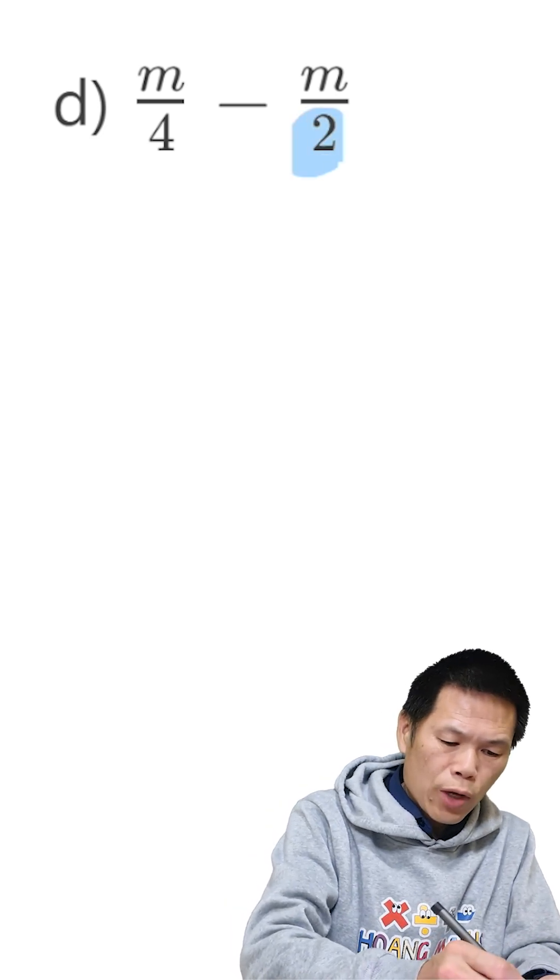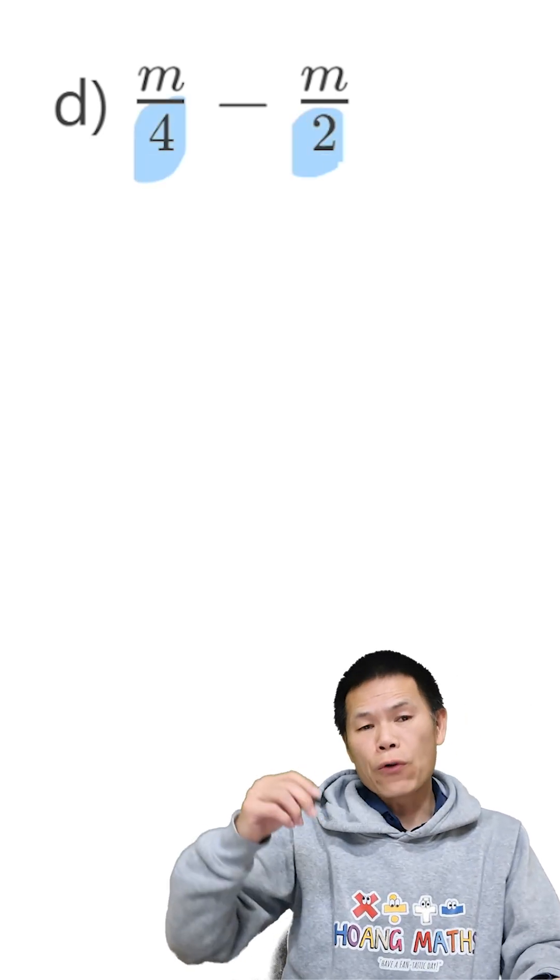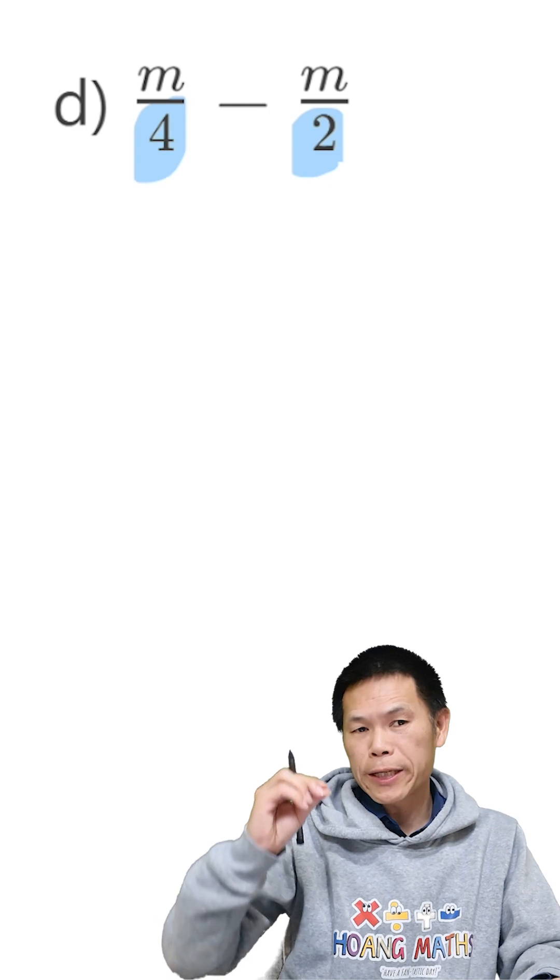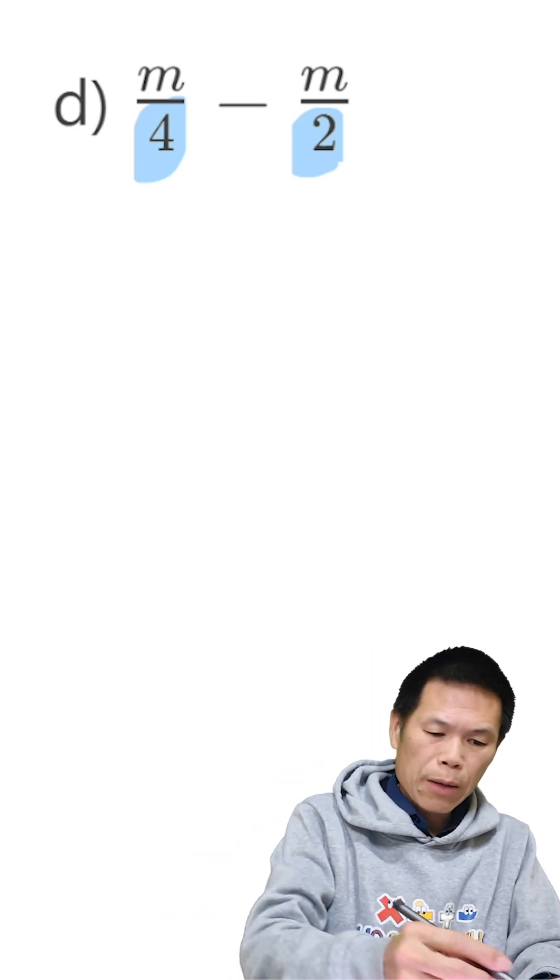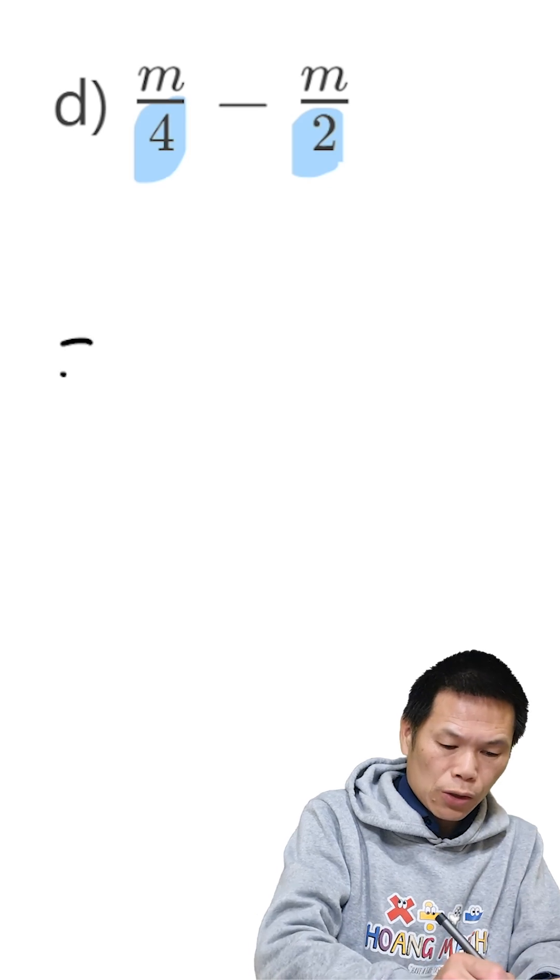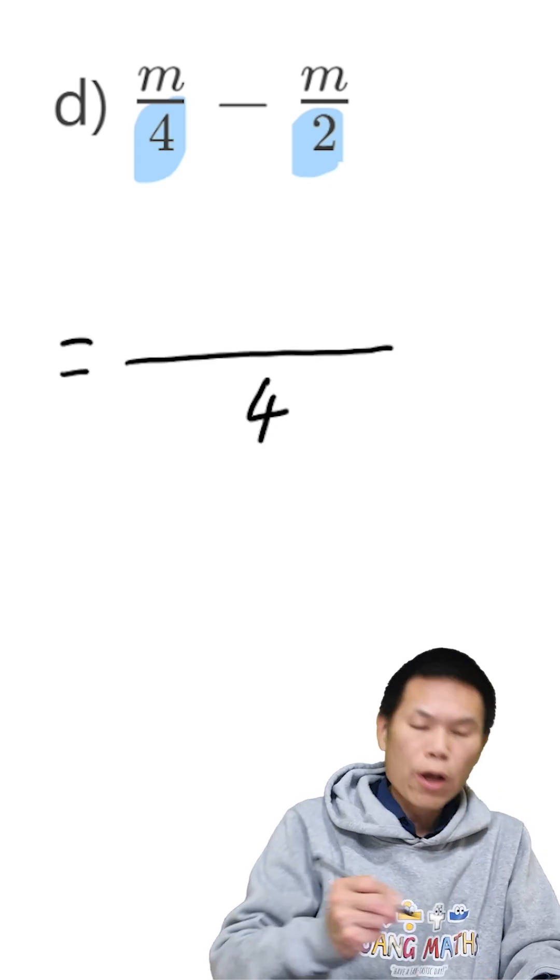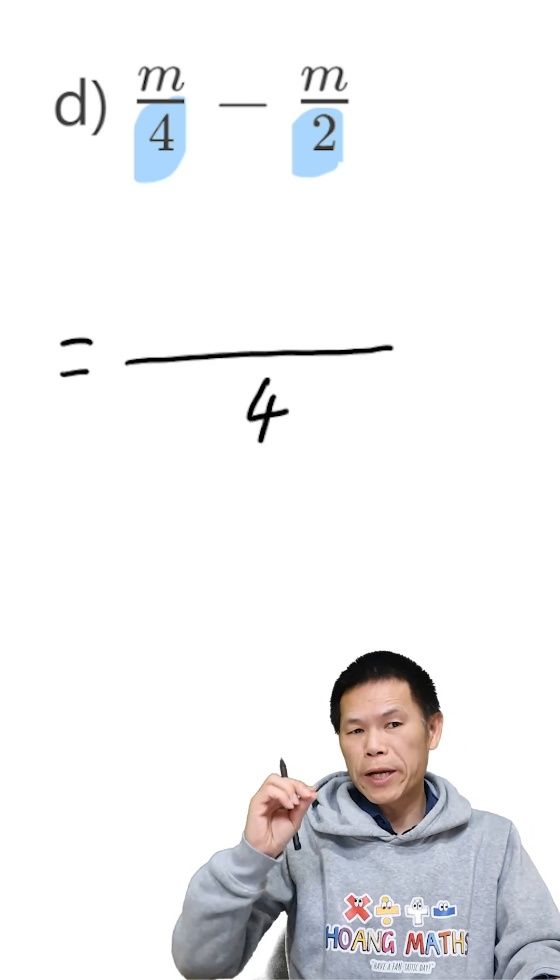So we have 2 and 4 here. So therefore, the lowest common denominator is 4, because 4 is also a multiple of 2. So that means down here must be 4, because the lowest common denominator is 4.